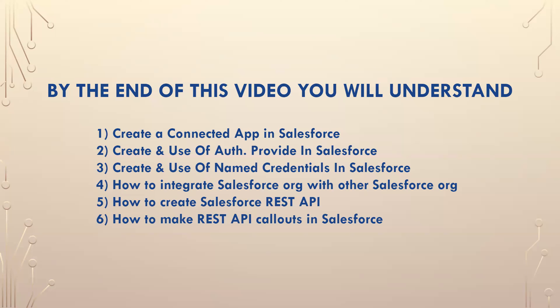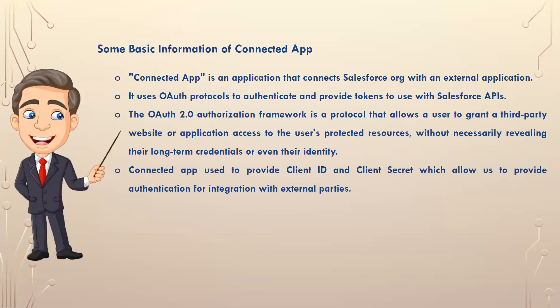What is a connected app? A connected app is an application we can use to build a bridge between two orgs. It creates a permanent connection using an authentication provider. When you create a connected app in the target org, you get a consumer key and consumer secret. Those two things we need to implement in the auth provider, and it makes a permanent connection between the two orgs, allowing data to flow from one org to another without restriction.